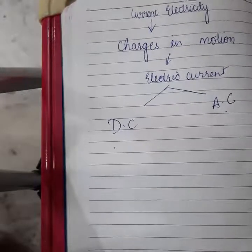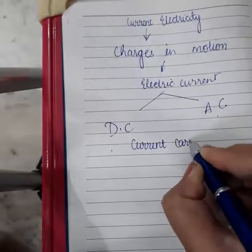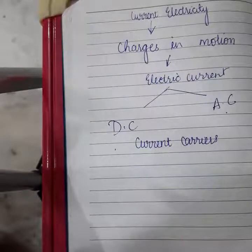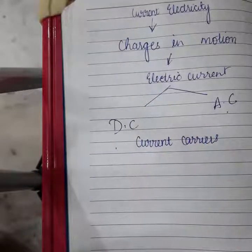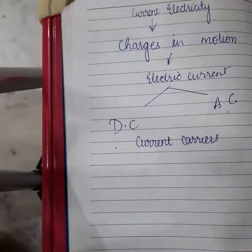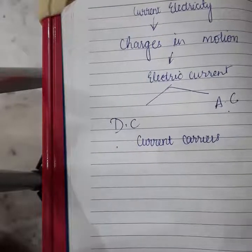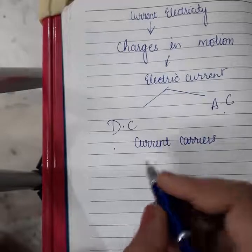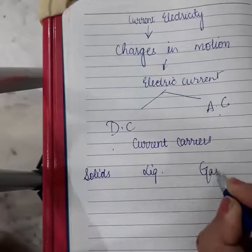Next, we are going to study about current carriers. Current carriers are the charged entities that constitute the electric current. In every different conducting substance, the charged entities are different. The charge carriers are those which carry the charge forward and are responsible for conductance. Current carriers exist in solids, liquids, and gases.